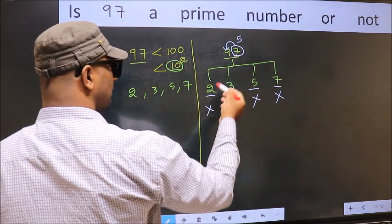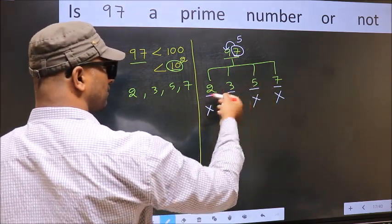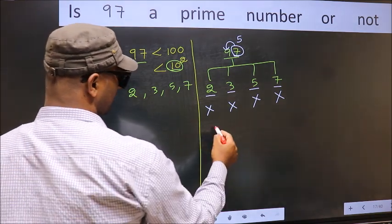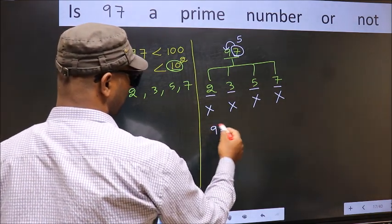So, 97 is not divisible by any of these numbers. Hence, 97 is a prime number.